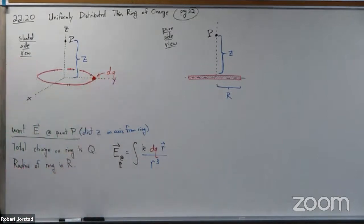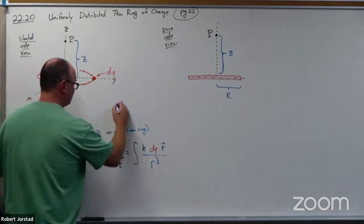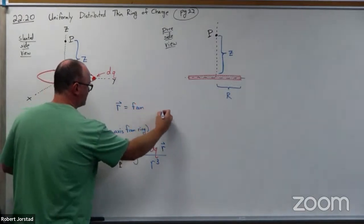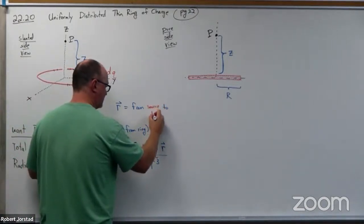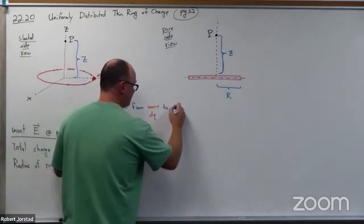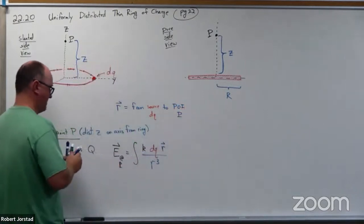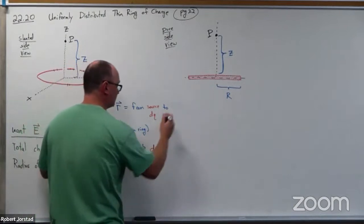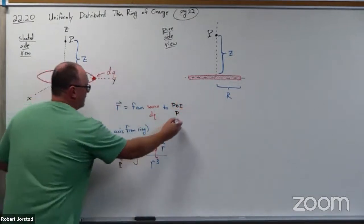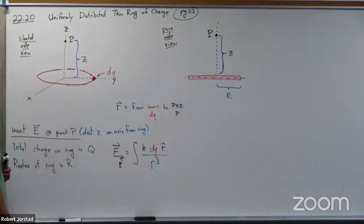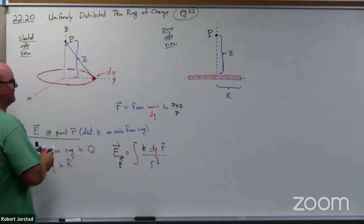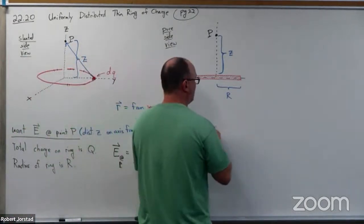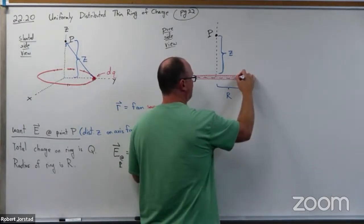Let's take one particular chunk — this is my choice of dQ. The r vector goes from the source charge dQ to the point of interest P. I do not want to go towards the origin anymore; I want the electric field at P. So I start at the source and end up at P. Notice that is not big R.